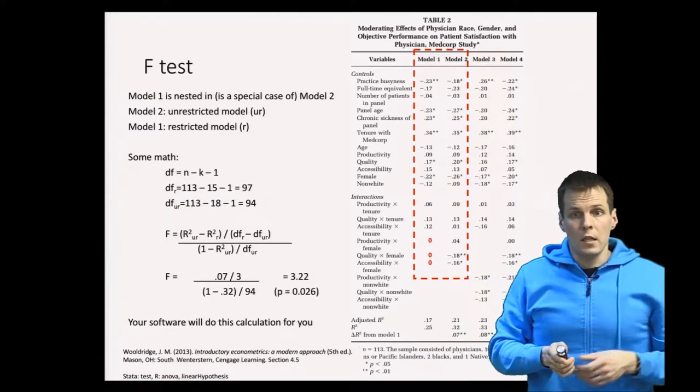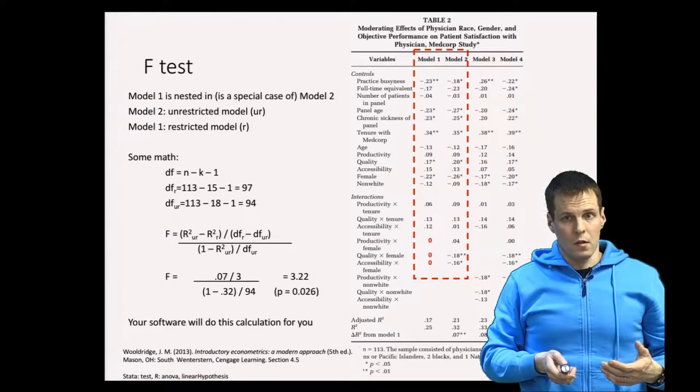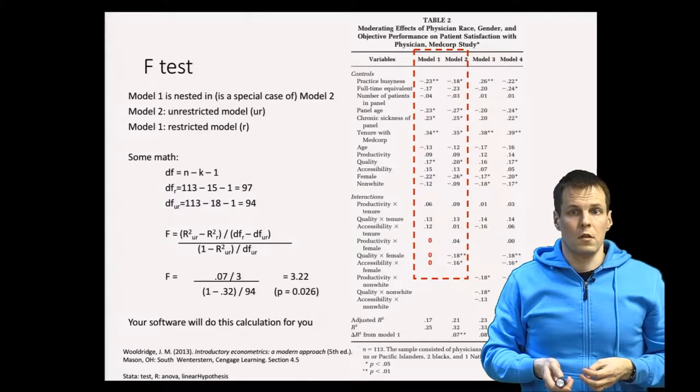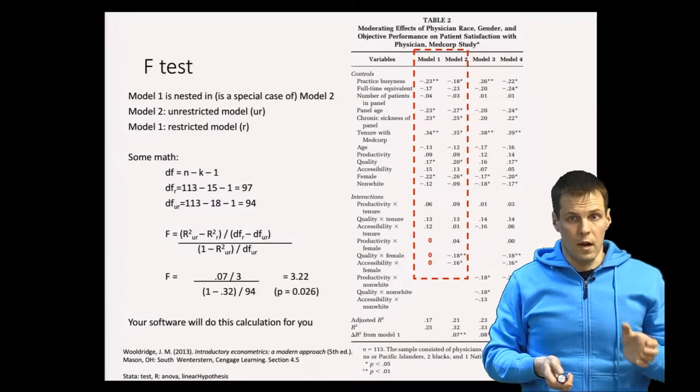In maximum likelihood estimates we don't have the r-square. We don't have the sum of squares. Instead we use the deviance statistic.